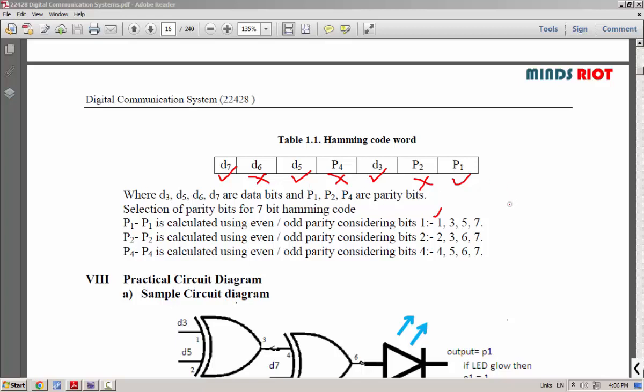Likewise, similarly we will check for the P2 bit. P2 is the parity bit 2. Therefore, we will check 2 bits, P2 and D3. We will start with P2 and D3. Check P2 and D3, skip P4 and D5.